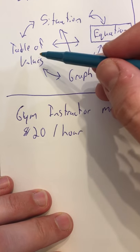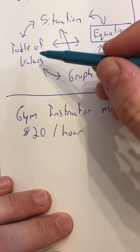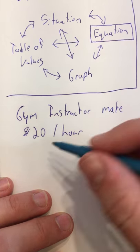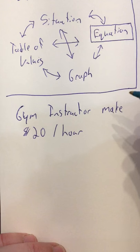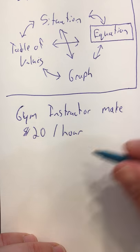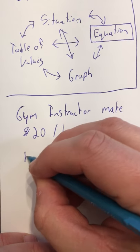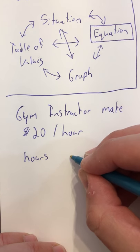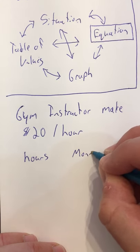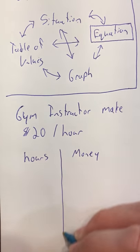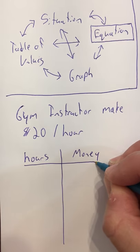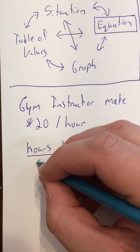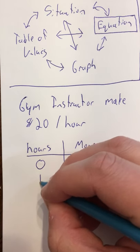Now I want to go to a table of values — that's called a t-chart from your grade 8 teachers. To get to that table of values we need our variables. In this situation, she is going to work a number of hours and she is going to make money.